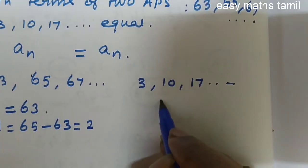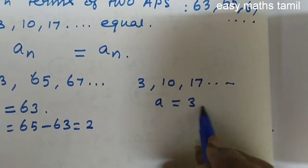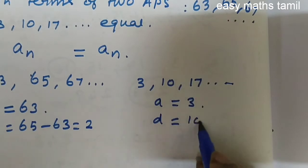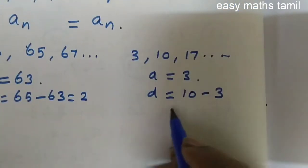For the second sequence, the value of a is 3 and the common difference d is a2 minus a1, which is 7.